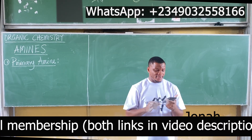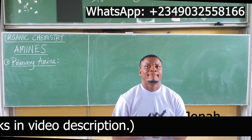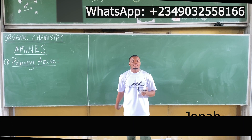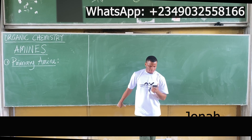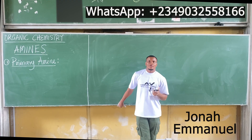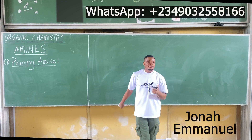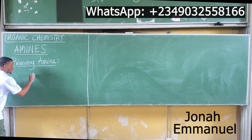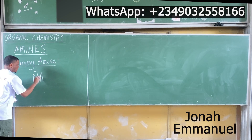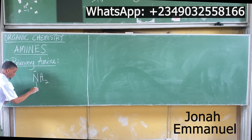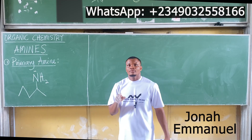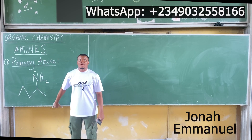Please listen. A primary amine is an amine where the nitrogen is attached to just one organic substituent — just one organic substituent. When it comes to amines, you'll be seeing dots on the nitrogen in some cases.